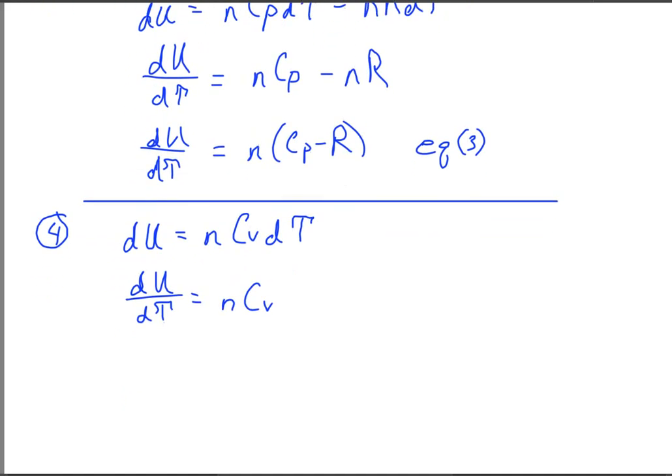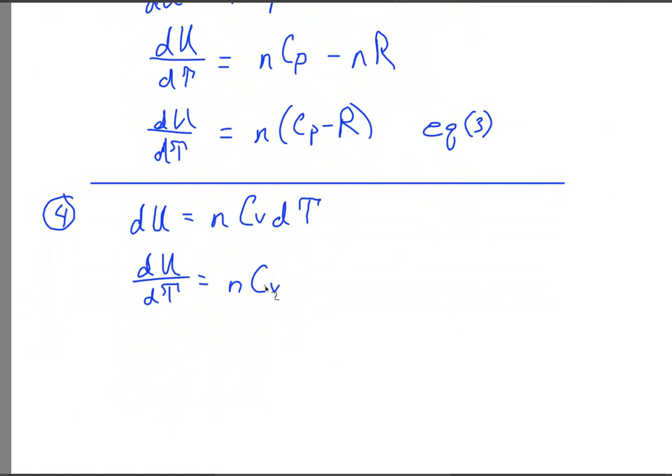Now what I would like to do is to substitute this nCv into that spot. Since this is dU dT and this is dU dT, I'd like to substitute in.